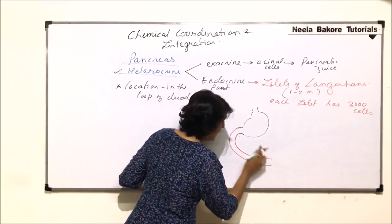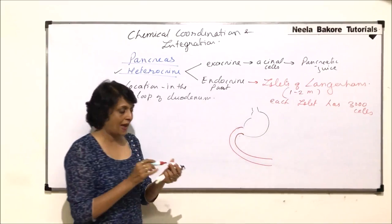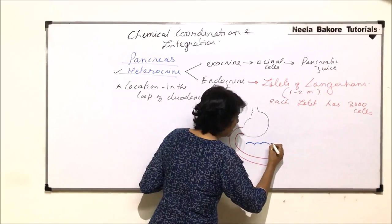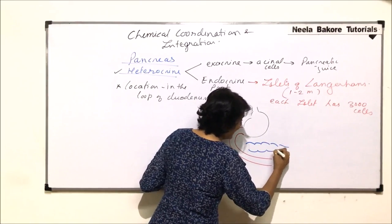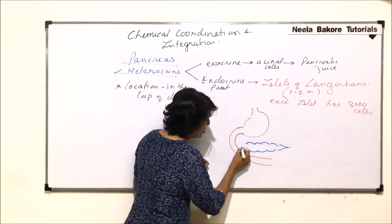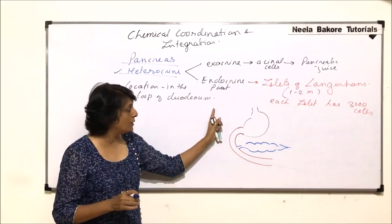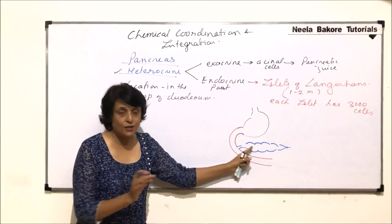From here, this loop of duodenum is formed. This loop of duodenum has the pancreas. So this pancreas which is present here is a long gland and it pours its secretion into this duodenum.